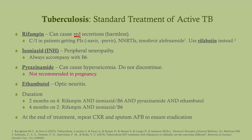Rifampin is contraindicated in pretty much all patients with HIV, because it's contraindicated for people getting protease inhibitors and for people getting NNRTIs. That encompasses most people on antiretroviral therapy. Remember, protease inhibitors for HIV all end in -navir, and the ones used in hepatitis all end in -previr. If you've got a patient who cannot be on rifampin, you're going to give them rifabutin instead.